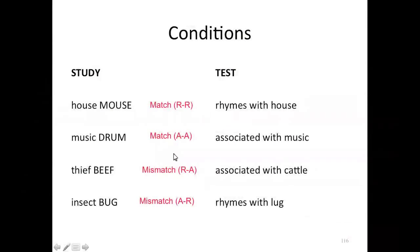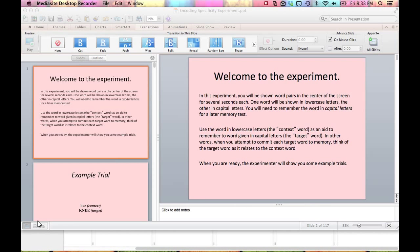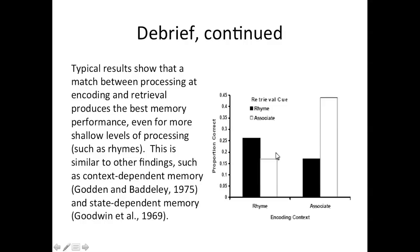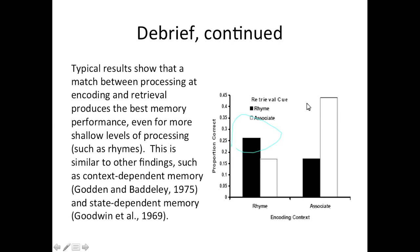We should be better at the first two match conditions and worse at the second two mismatch conditions. Here are some traditional results. The black bar on the left is when you rhyme and rhyme. The white bar on the right is associate and associate. They are much higher than the two mismatch conditions in the middle, where we don't do so well.